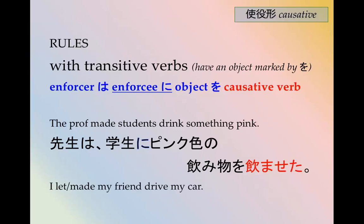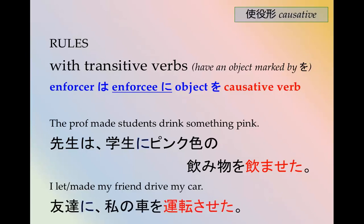I let or made my friend drive my car. You can say 私は but you can usually leave that off. So: 友達に私の車を運転させました。 Is it to let them drive the car or make them drive the car? It really depends on the context. Allowing someone to do something and forcing someone to do something don't have a strong linguistic differentiation in Japanese.